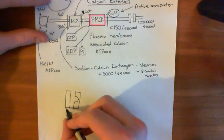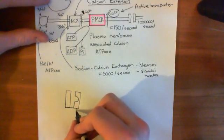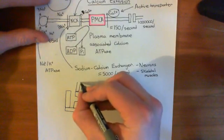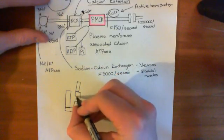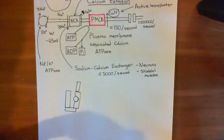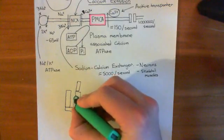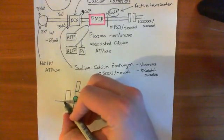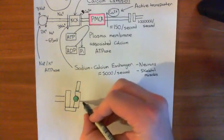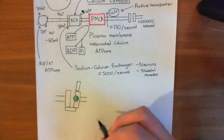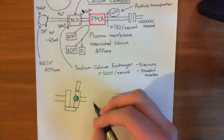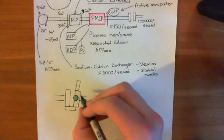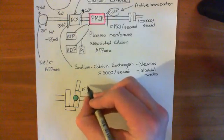Initially, the situation we'll start with is that the cytosolic gate is closed, the extracellular gate is open, and you have calcium bound to the binding site. We'll start at this position and get back to it — it's a great cycle. We'll show how you get from this position to extruding the calcium, and then back all the way here. This is the NCX.